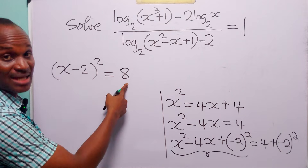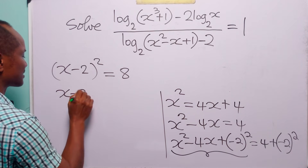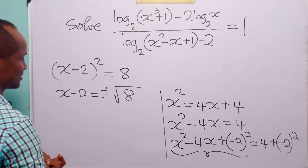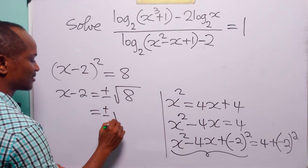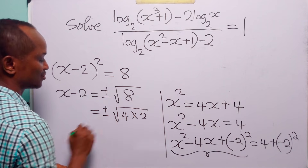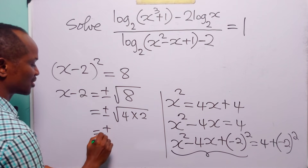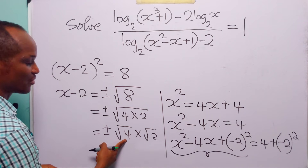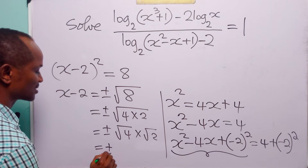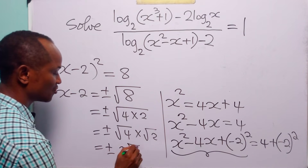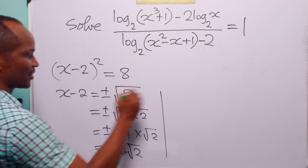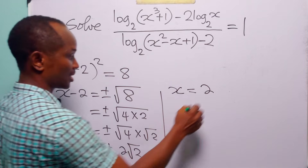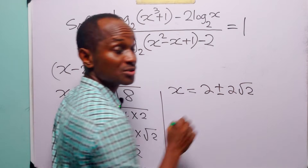Now we take the square root of both sides of this equation. We have that x minus 2 is equal to plus or minus the square root of 8. This is equal to plus or minus the square root of 4 times 2, which is plus or minus the square root of 4 times the square root of 2. Since the square root of 4 is 2, this equals plus or minus 2 root 2. So x equals 2 plus or minus 2 root 2.